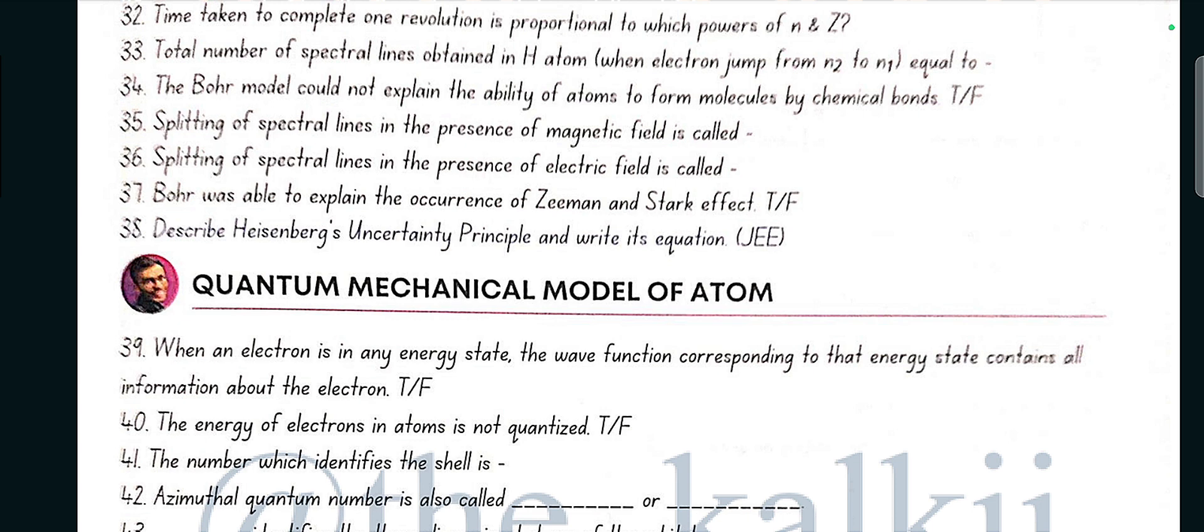Describe Heisenberg uncertainty principle and write its equation. It states that it is impossible to determine simultaneously the exact position and exact momentum or velocity of an electron. The equation is delta x, change in position, and delta p, change in momentum, is greater than or equal to h by 4 pi. Or we can write it as delta x delta v is greater than or equal to h by 4 pi m.